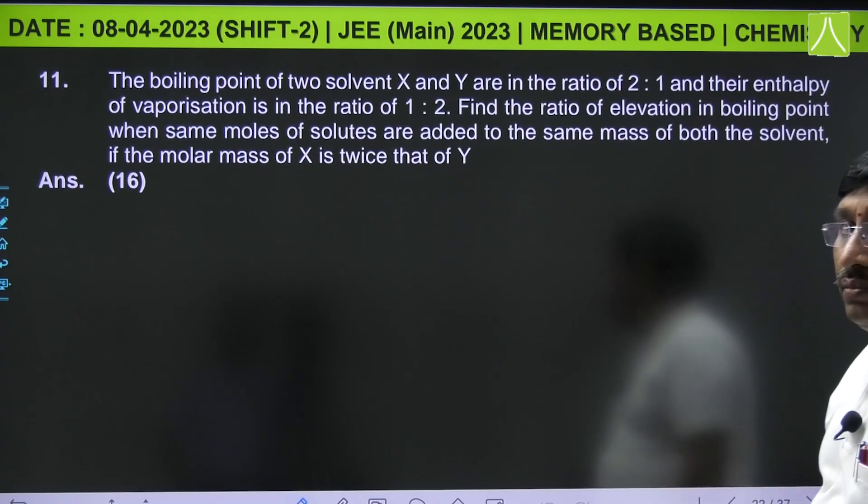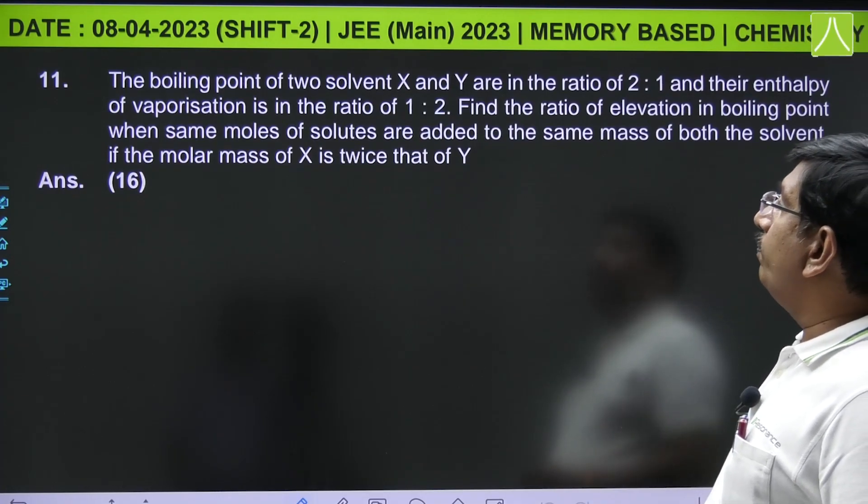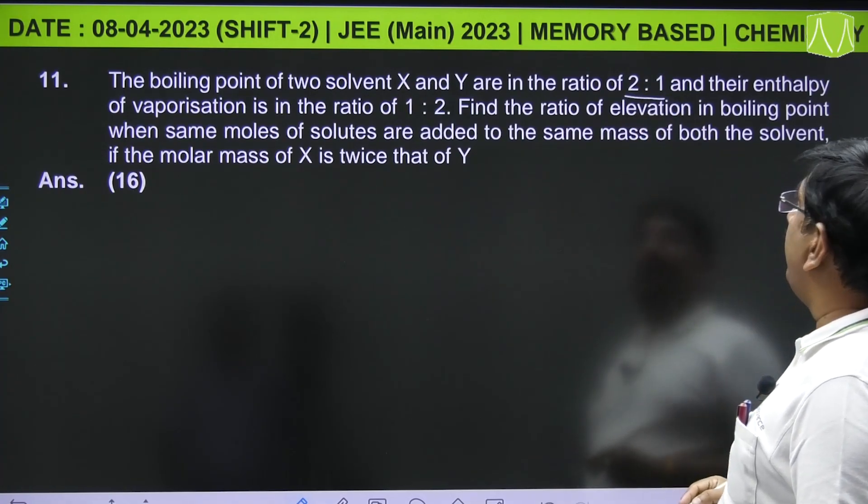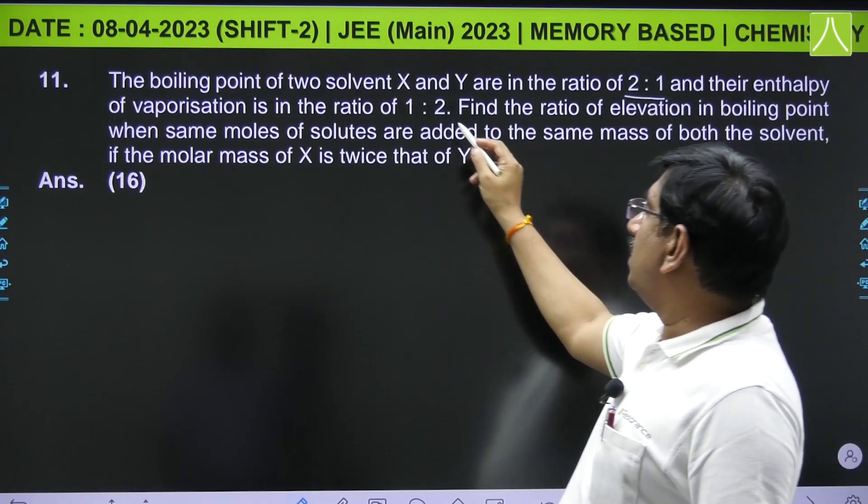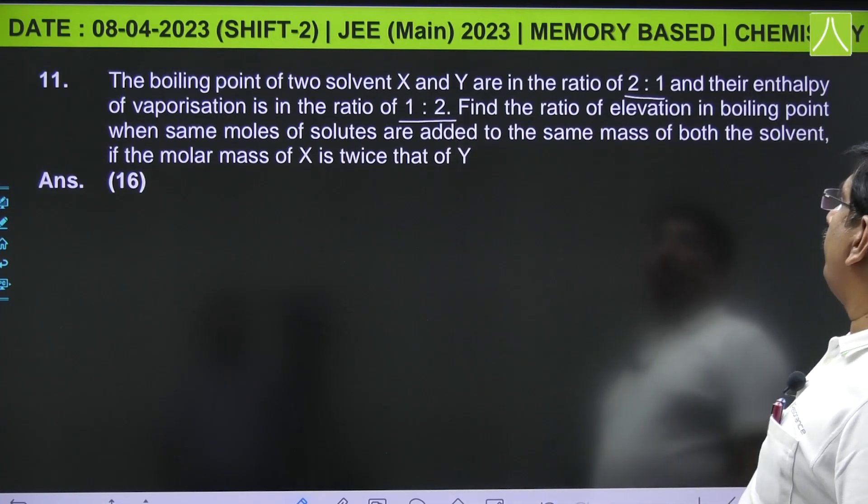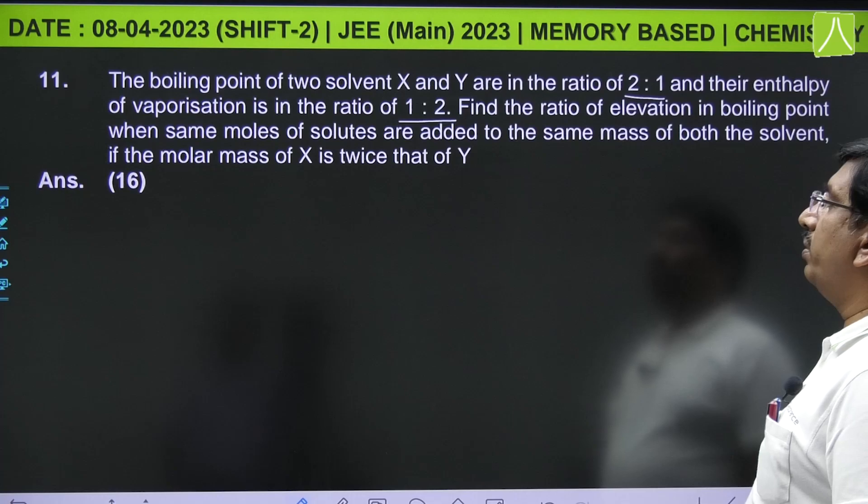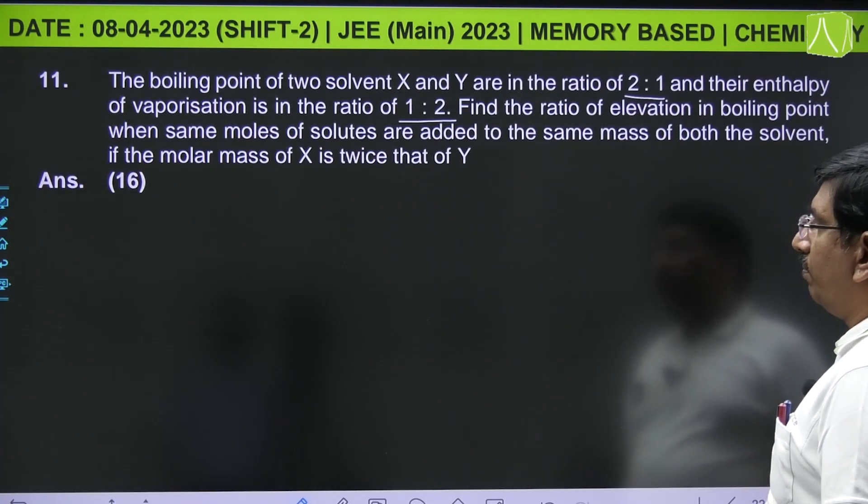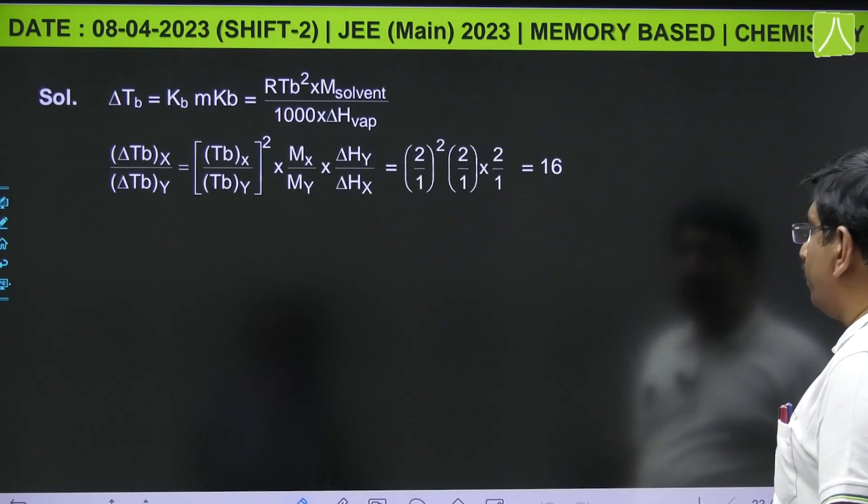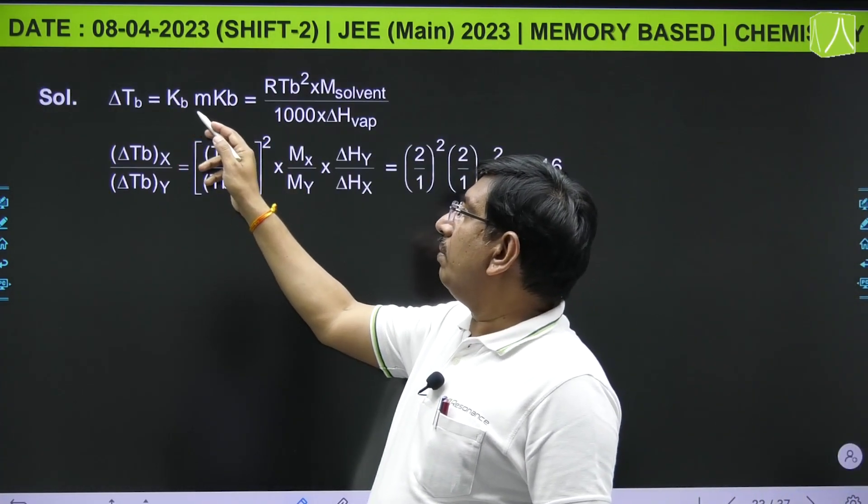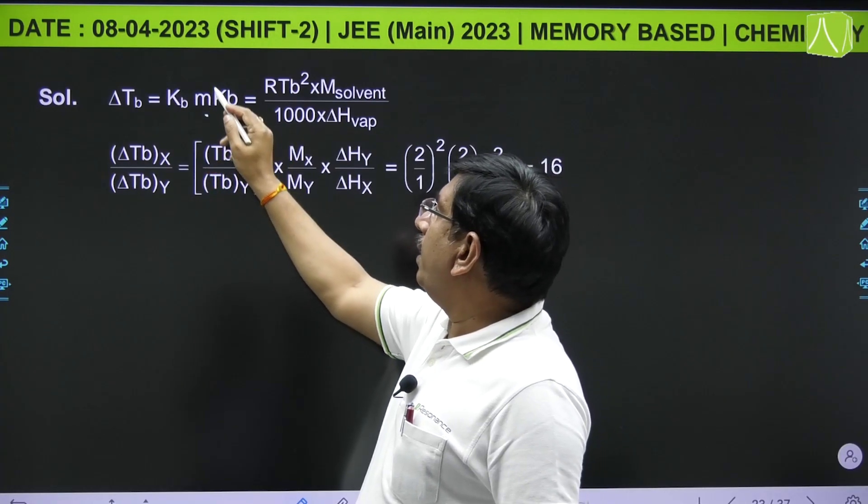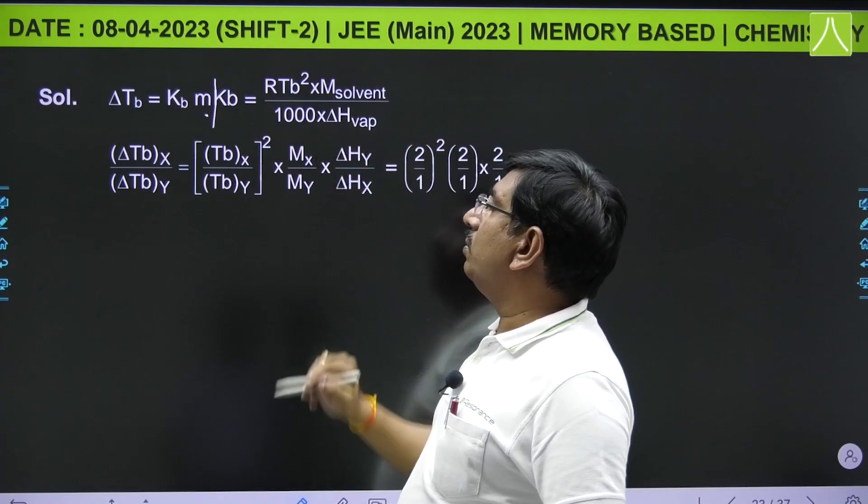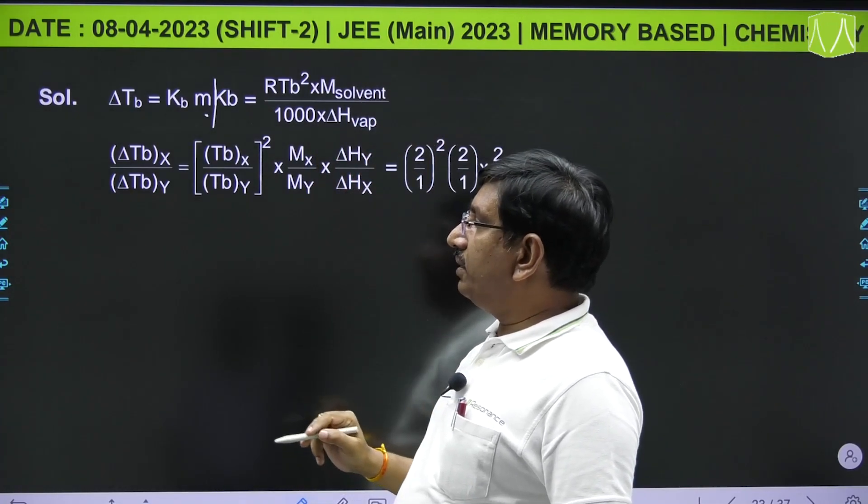Next from solution colligative properties: the boiling point of two solvents X and Y are in ratio 2:1, and their enthalpy of vaporizations are in ratio 1:2. Find the ratio of elevation in boiling point when same moles of solutes are added to same mass of both solvents, if molar mass of X is twice that of Y. Here, ΔTb = Kb × m, and Kb = RTb²M/1000ΔHvap.